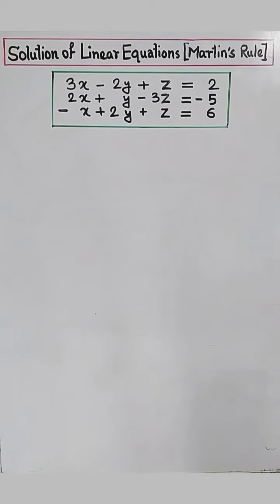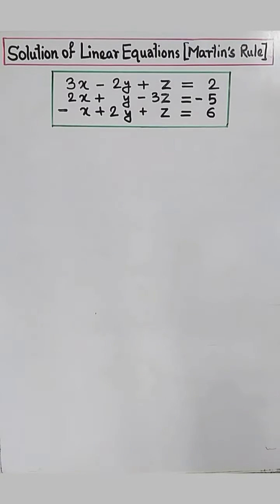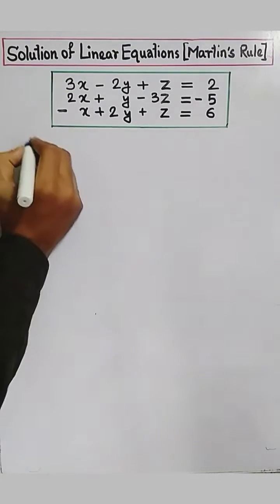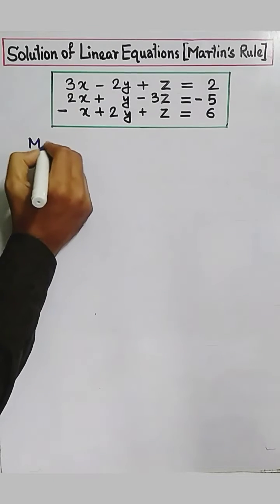In this case we are given three equations: 3x minus 2y plus z equals 2, 2x plus y minus 3z equals minus 5, and minus x plus 2y plus z equals 6.